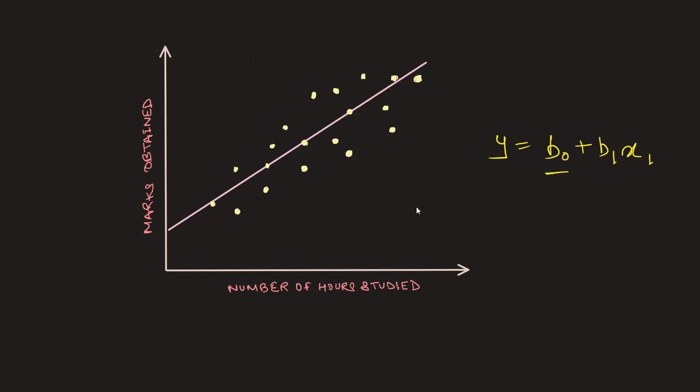b0 is nothing but the point from where we are initiating the straight line — the bias — which in our situation falls at this point on the axis, the point from where we start drawing the straight line. x1 is the value of the independent variable, which in our case is number of hours studied.